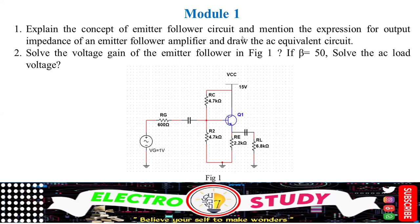Explain the concept of the emitter follower circuit. You might have done a similar topic in the laboratory session. Using the BJT you can make an emitter follower. Mention the expression for the output impedance of an emitter follower amplifier and draw the equivalent circuit. You should have a circuit — better go for the common emitter configuration. You should mention certain equations. For 10 marks, first provide the circuit diagram, then a simple working explanation, then the relevant equations, and finally draw the equivalent circuits.